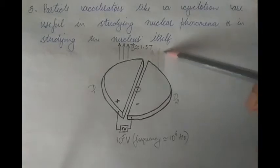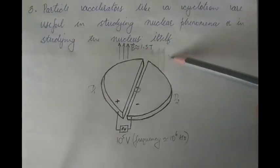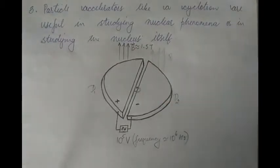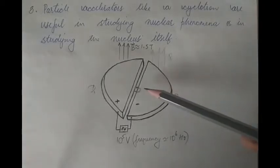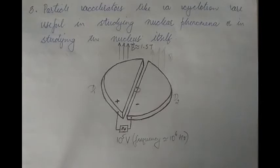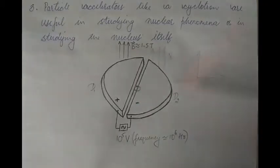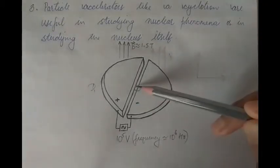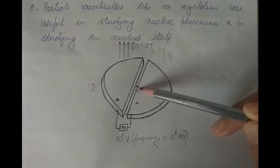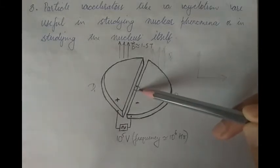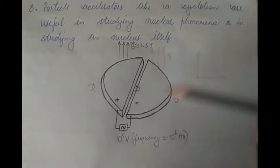The charged particle enters the magnetic field with velocity V. Whenever a charged particle enters a magnetic field with a certain velocity, it experiences a force that causes it to move in a circular path. So inside D2 the charged particle moves in a semicircular path, travels through it, and again comes in between the two D's.